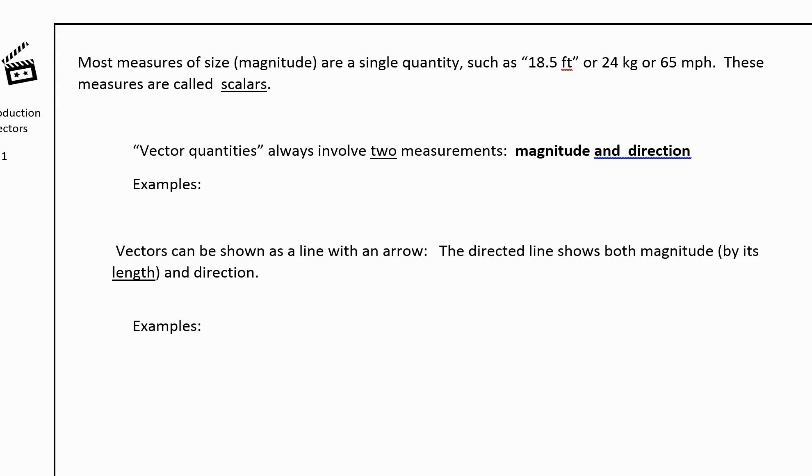So most things you've dealt with in math so far have just been a single quantity. So in word problems you've seen something like 18.5 feet, or you've had a weight maybe 24 kilograms or 65 miles per hour. And we call these scalars, just when you have a single number describing a measurement.